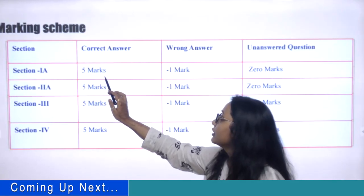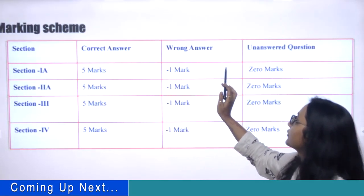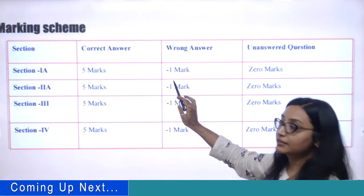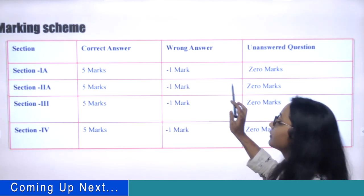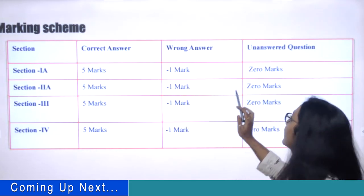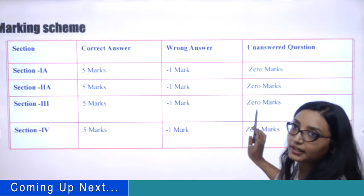For each correct answer, five marks will be given, and for each wrong answer, one minus mark will be deducted, and for unanswered questions, zero marking.